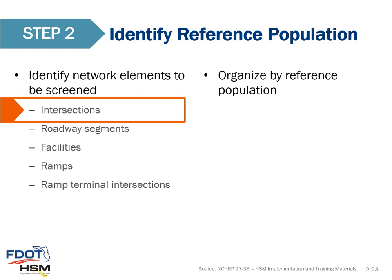Step 2 is to identify your reference population — those network elements to be screened. It could be intersections, roadway segments, fatalities, ramps, or ramp terminal intersections. For example, if implementing signalized intersection treatments such as red light cameras, you would look at signalized intersections so that your reference population consists of different examples of signalized intersections.